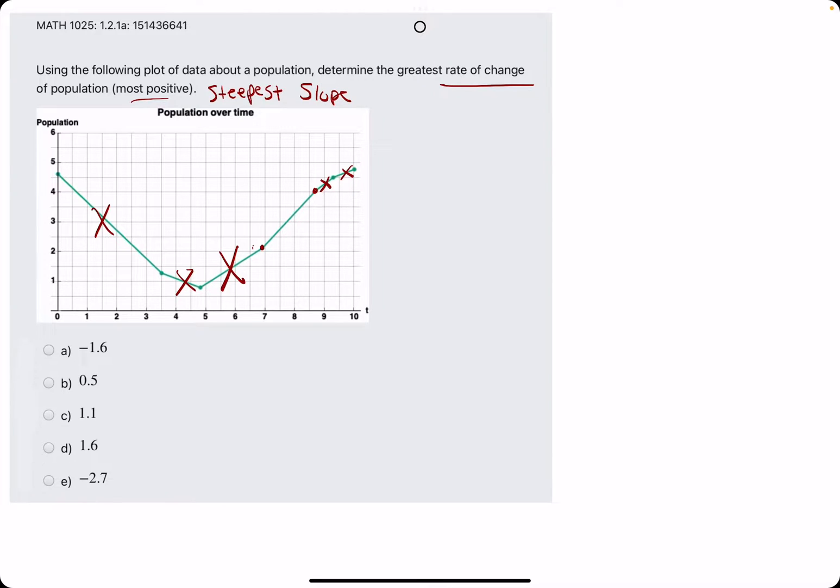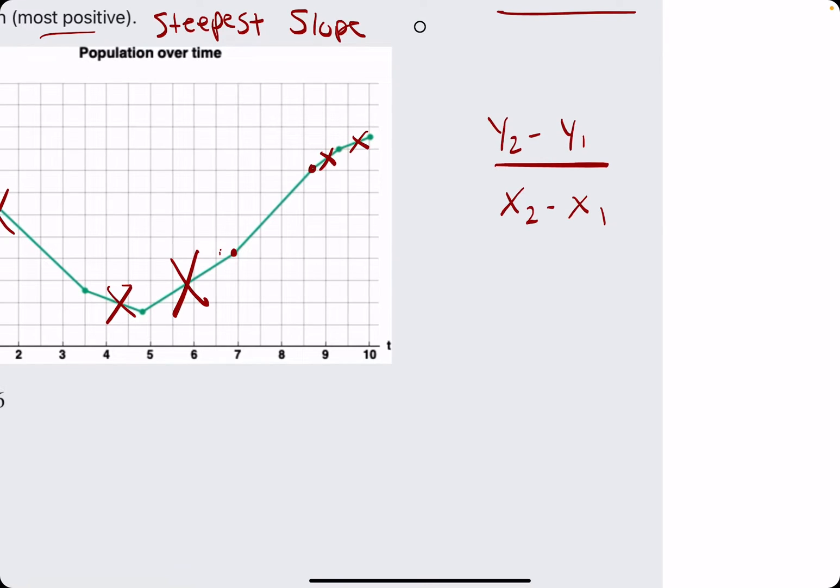In order to find the slope of that segment, we need to use the slope formula, which is y2 minus y1 over x2 minus x1. We're identifying first the ordered pairs of each of these two points.